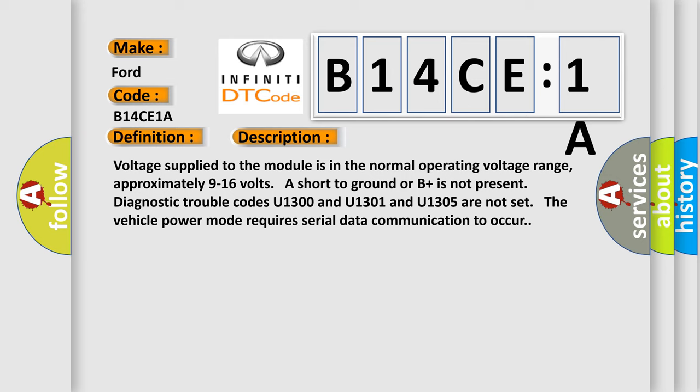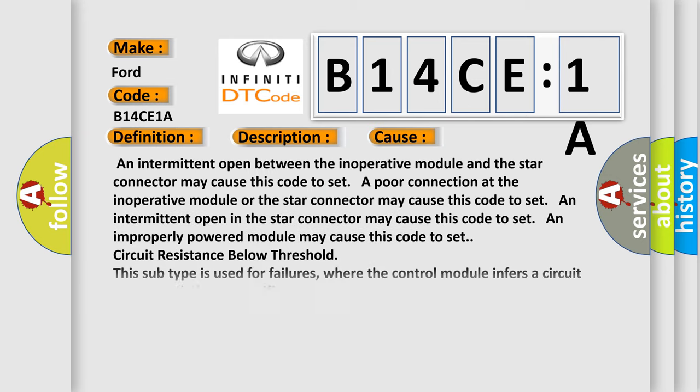This diagnostic error occurs most often in these cases: an intermittent open between the inoperative module and the star connector, a poor connection at the inoperative module or star connector, an intermittent open in the star connector, an improperly powered module, or circuit resistance below threshold. This subtype is used for failures where the control module infers a circuit resistance below a specified range.